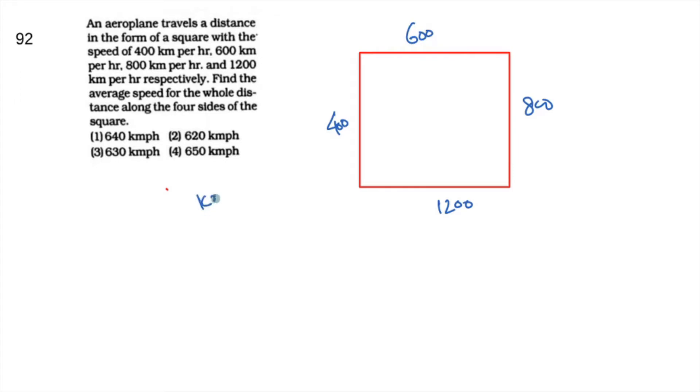The speeds are in km per hour. I am asking you what is the total average speed. For average speed, assume that each side length is 1200 km.